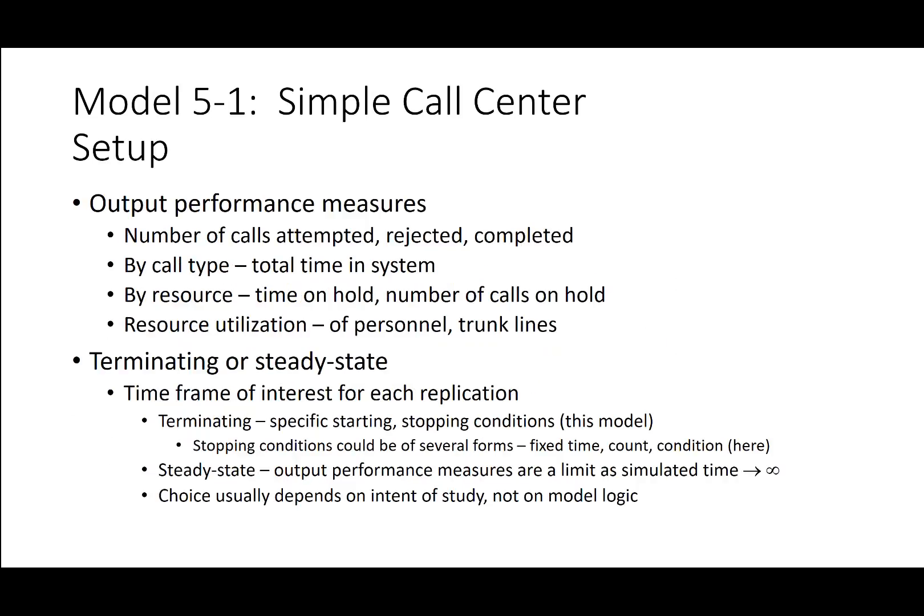The output performance measures to track are the number of calls attempted, rejected, and completed, tracked by call type, total time in system, and by resource — the time on hold, the number of calls on hold, and resource utilization of personnel and trunk lines. We want to track terminating or steady state, with the time frame of interest for each replication. Terminating involves specific starting or stopping conditions; stopping conditions could be fixed time, count, or condition.